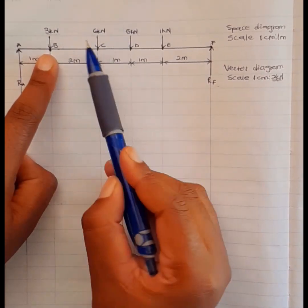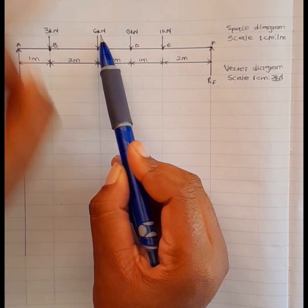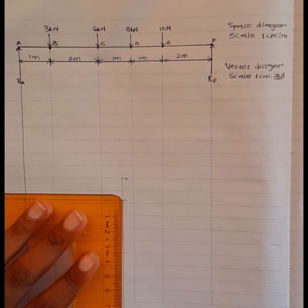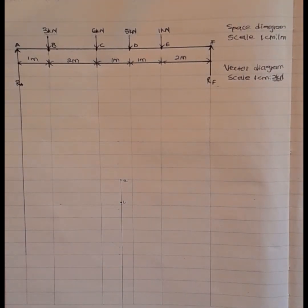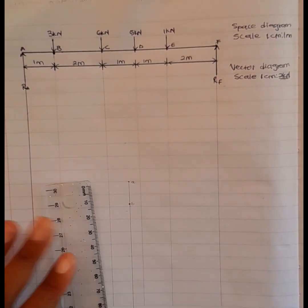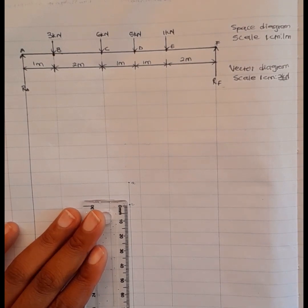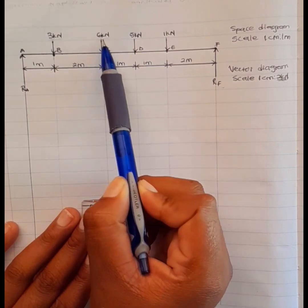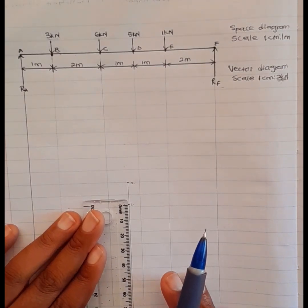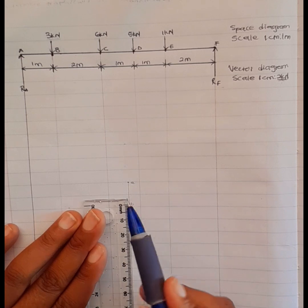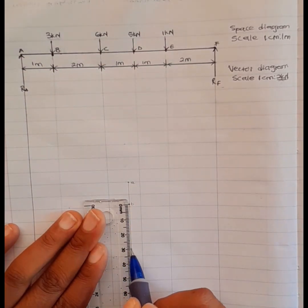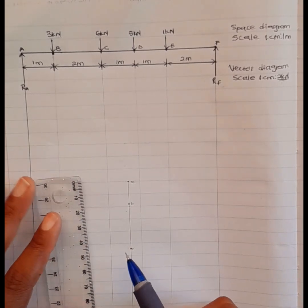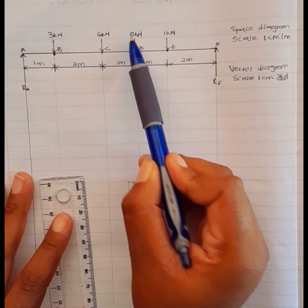From B to C I have a force of 6 kilonewtons. I'm going to take this force divided by 2 kilonewtons and I get 3. So I'm going to measure 3 centimeters down from point B, and that point is point C.